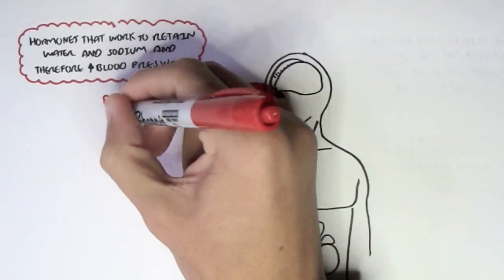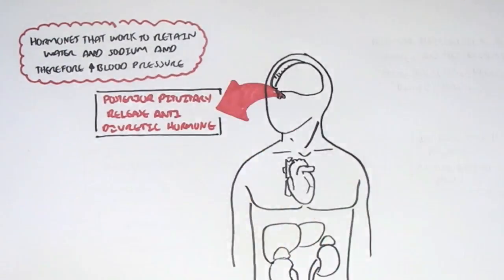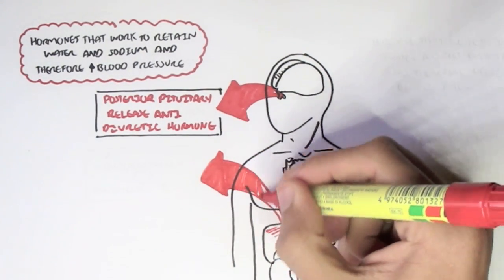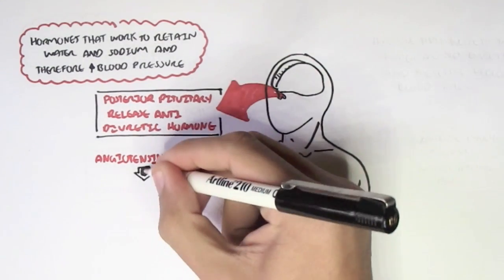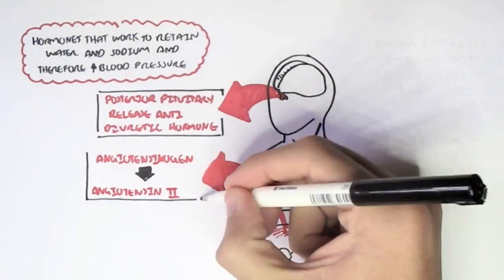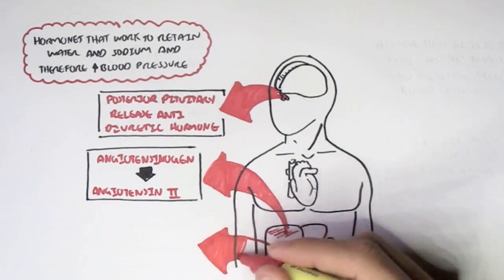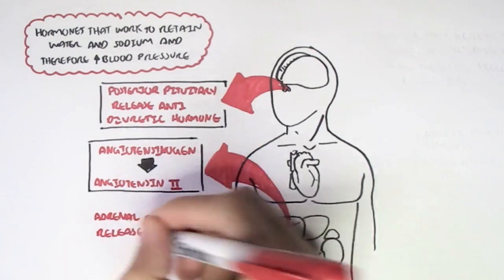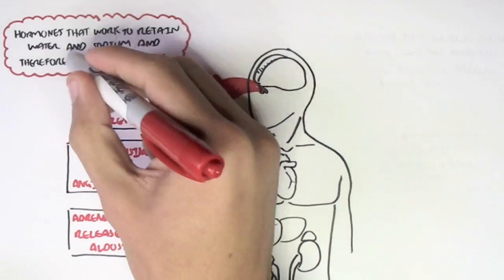These hormones include antidiuretic hormone, which is secreted from the posterior pituitary gland in the brain. You also have the liver that secretes angiotensinogen, which through some enzymes will be converted to angiotensin 2, the final product that increases blood pressure. The adrenal cortex can also release aldosterone, which increases blood pressure.